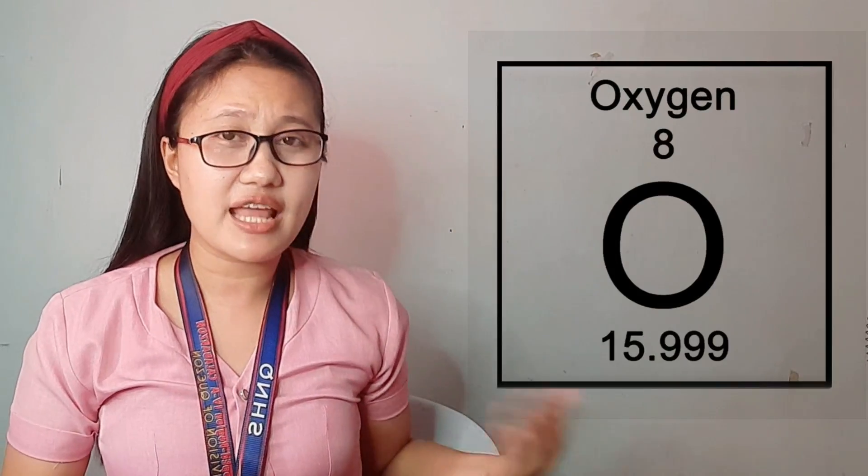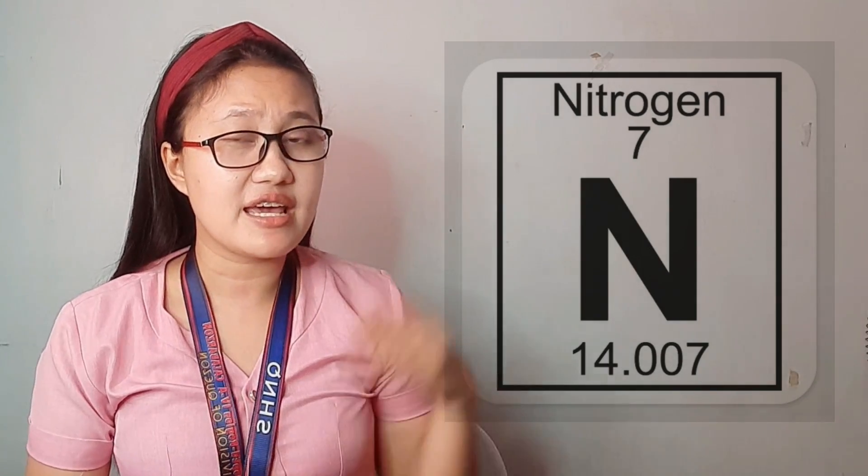In the periodic table, each element has its name and a symbol. The symbol is like the element's initials — for example, hydrogen has the symbol H, oxygen has the symbol O, and nitrogen has the symbol N. Now let's proceed to discussing compounds.